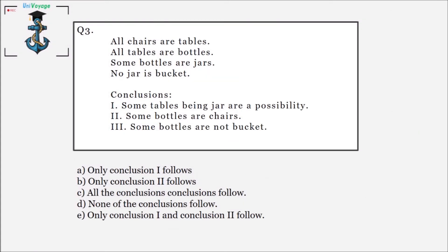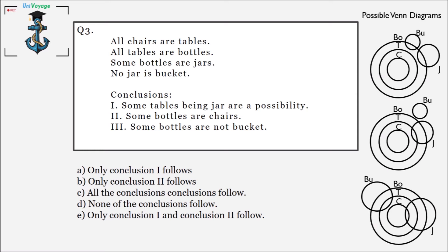The third question: all chairs are tables, all tables are bottles, some bottles are jars, no jar is a bucket. Same drill — pause the video, try to make a Venn diagram, then come back. I have made three possible Venn diagrams; there can be more because as the number of statements increases, the number of possibilities increases as well. There is also a possibility case in the conclusions.